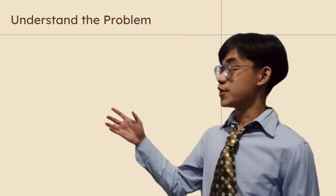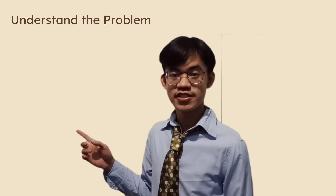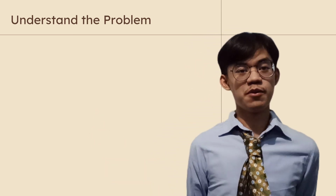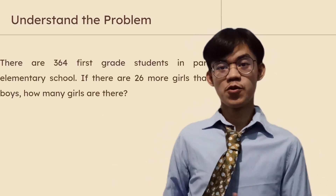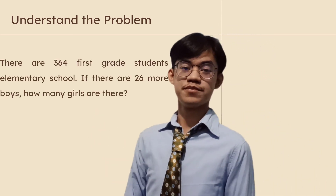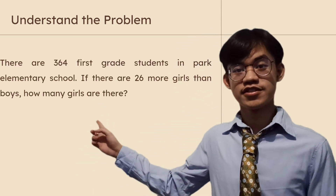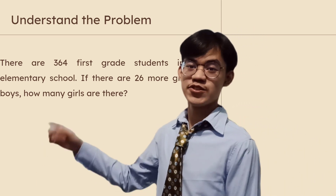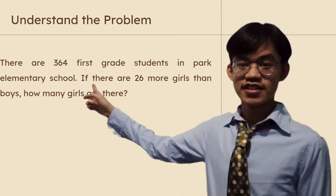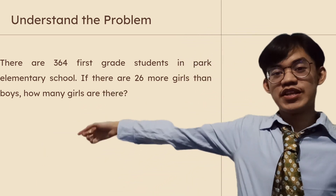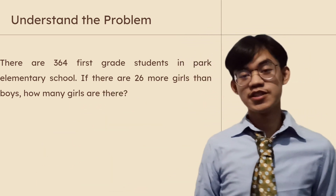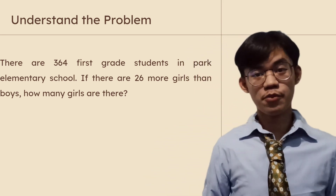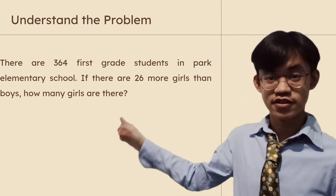First, you need to understand the problem to solve the problem. What is the problem? There are 364 first grade students in Park Elementary School. There are 26 more girls than boys. How many girls are there?